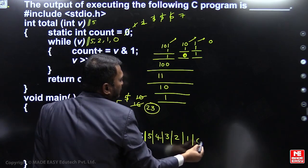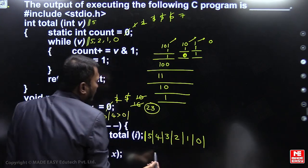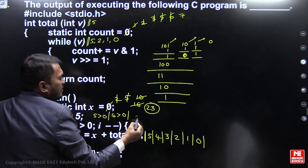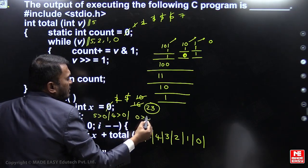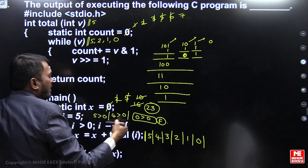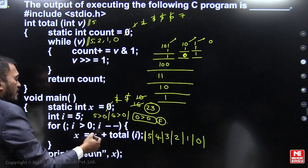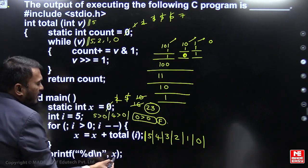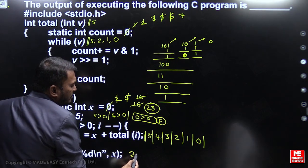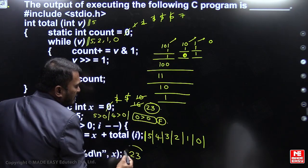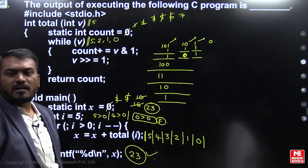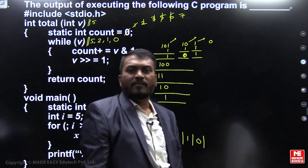Next, i becomes 0. 0 greater than 0 is false, so we exit the for loop and print x. The x value is 23, so 23 is printed on the screen.